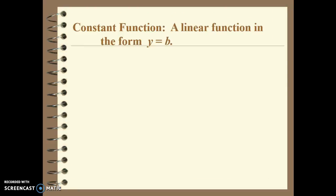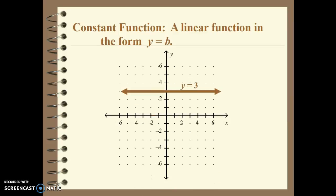First we're going to talk about a constant function. It's a linear function in the form of y equals b, where b is some number, so it's always going to be a horizontal line. No matter what x equals on the x-axis, y is going to be the same number. In this situation, y is always going to be 3, so we have a horizontal line at 3. That's a constant function.